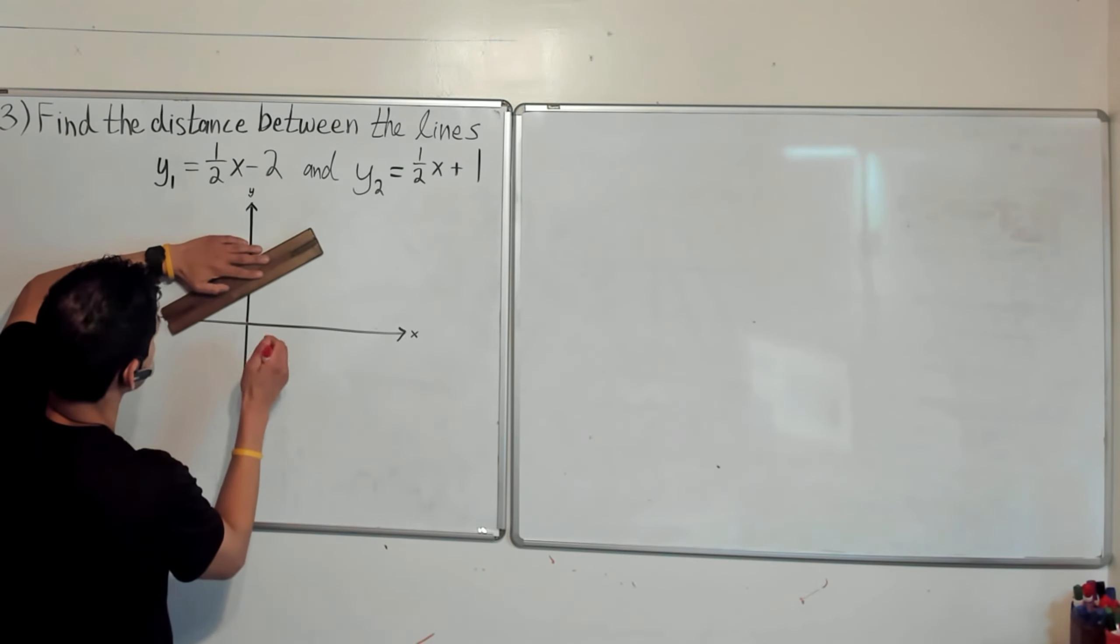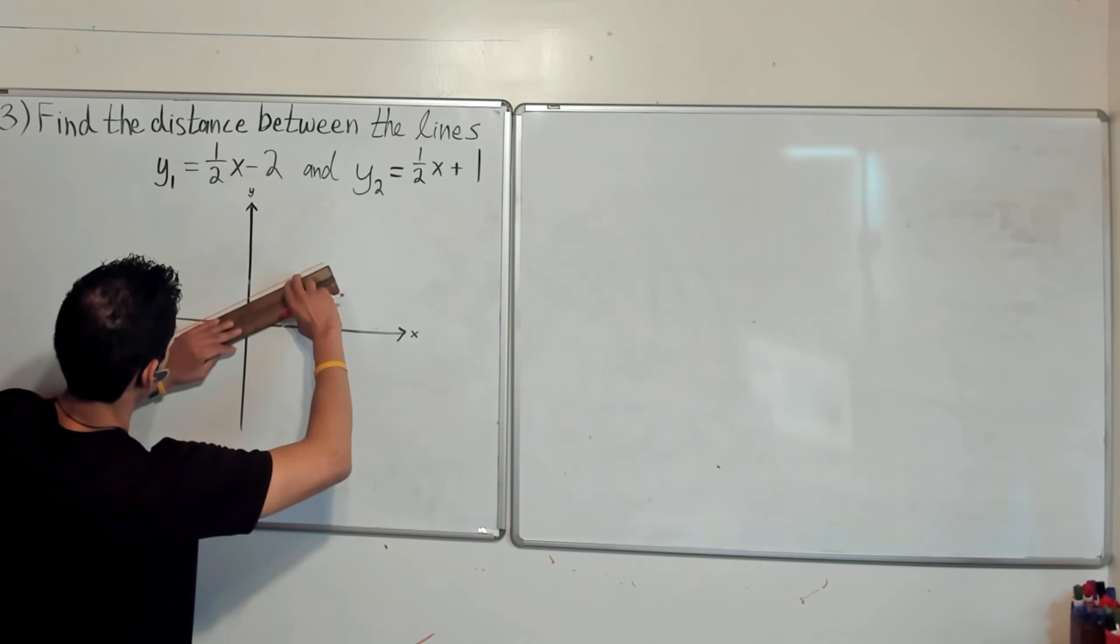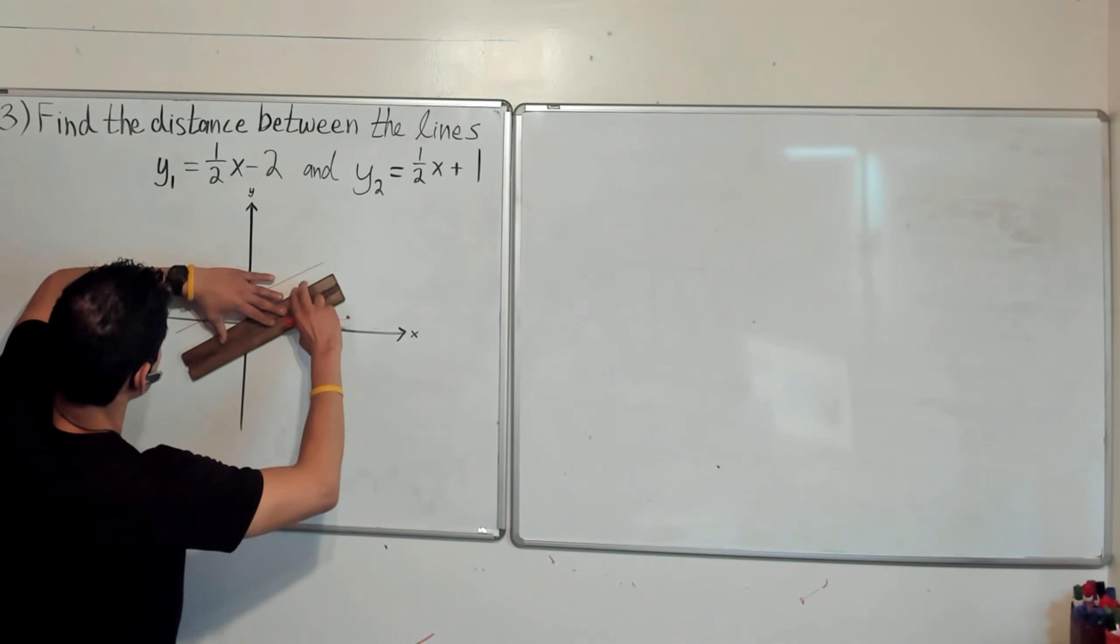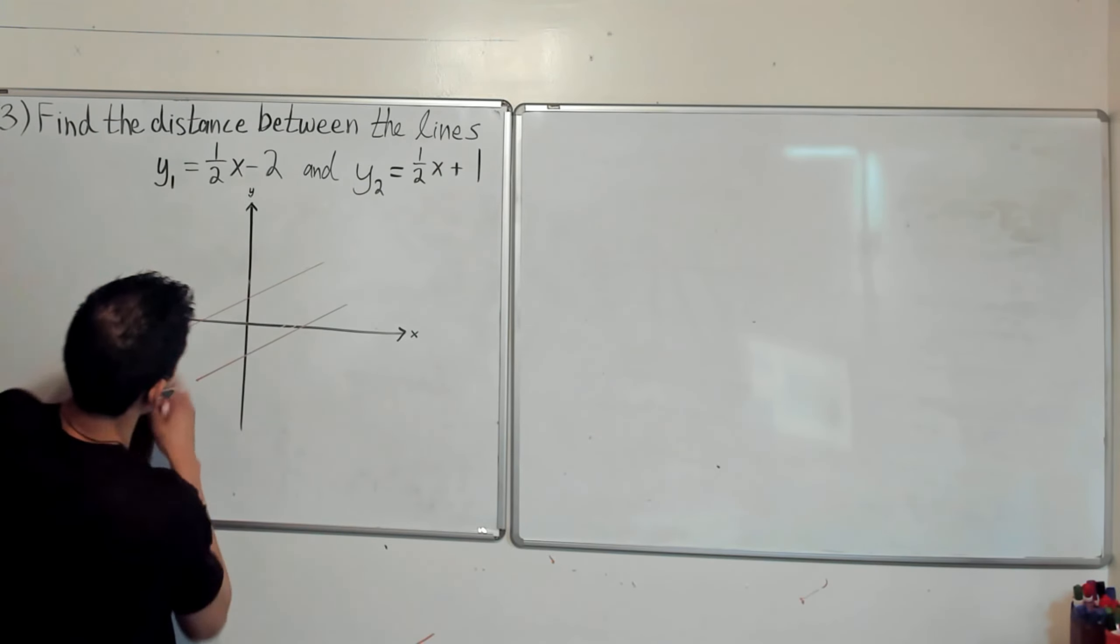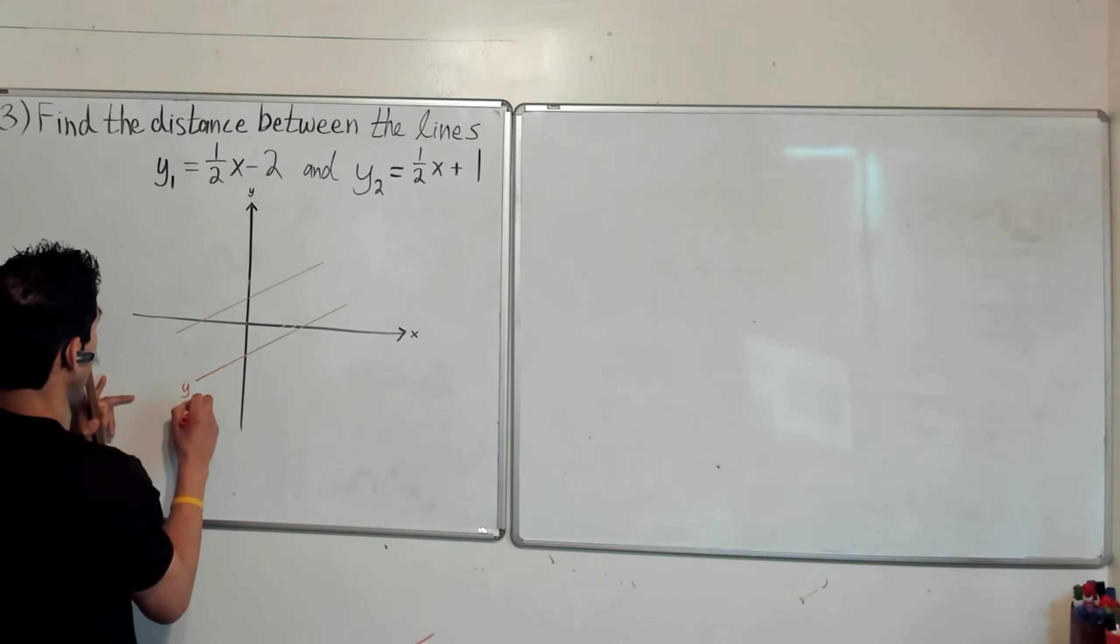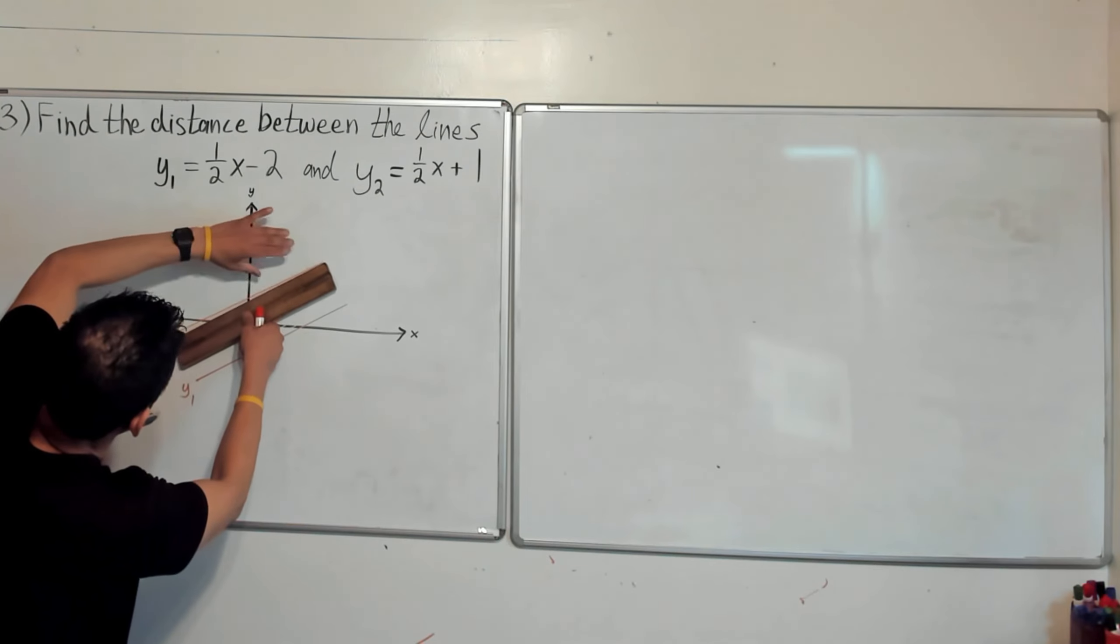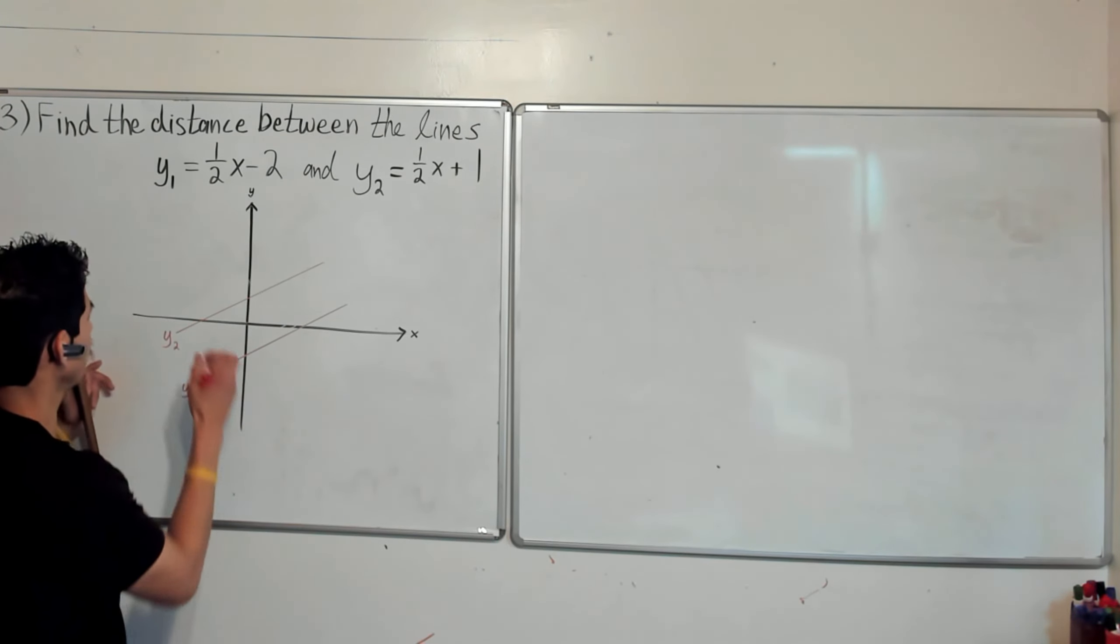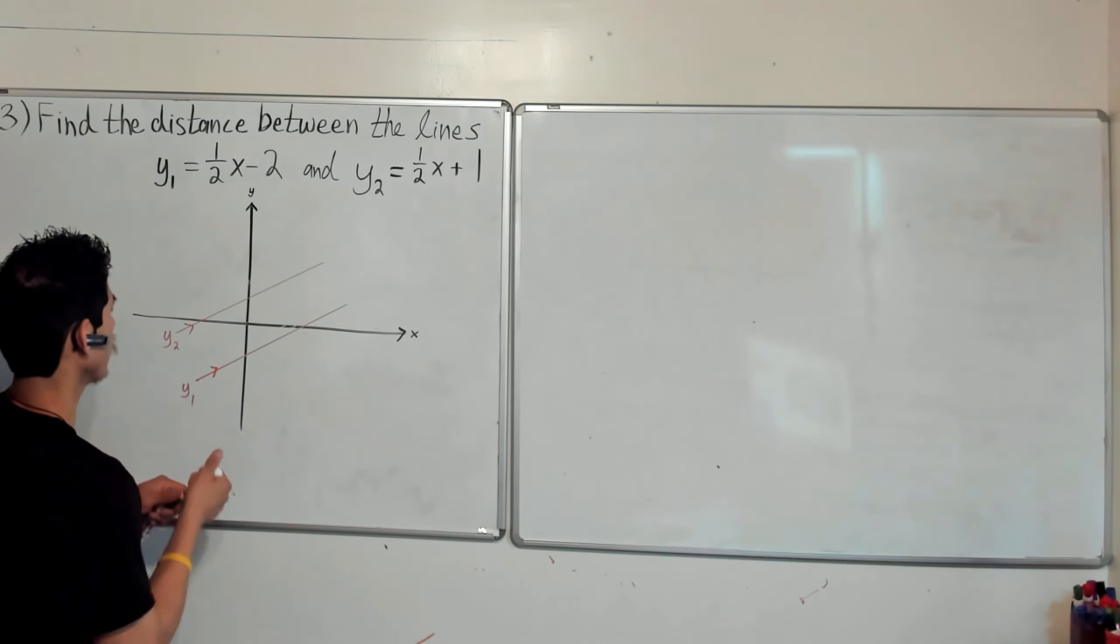These are going to be kind of flat. So y2, let's say it's something like over here. And y1 will be below that. I'm going to call this y1 and this will be y2. Now, are they parallel? I can't really tell. Okay. So these are parallel. And what I mean is when you're drawing your sketch, label the intercepts. So label where they go through the x and y axes.